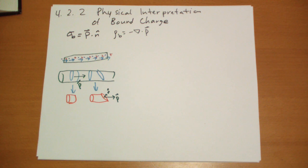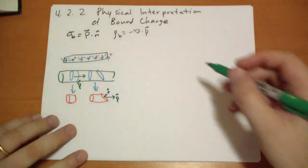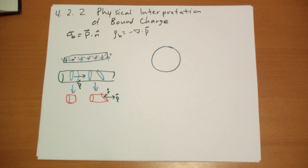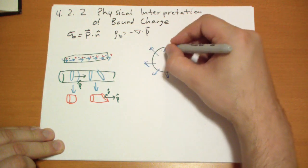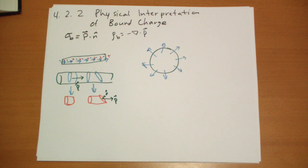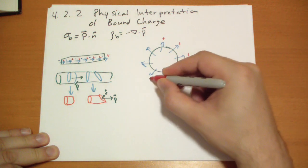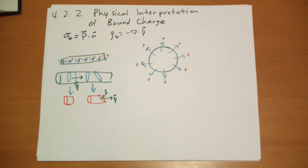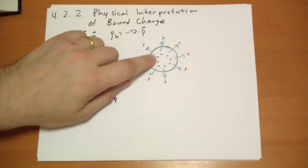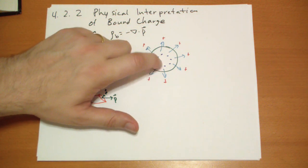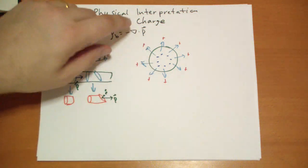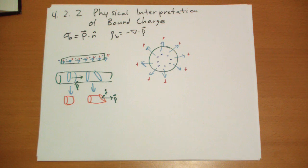What about the non-uniform polarization that gives you a bound volume charge? What does it look like when you have divergence? You take some volume and things are either going into or out of it. If the polarization is all pointing outward, you get a positive charge on the outside and negative charge accumulating on the inside — hence the bound volume charge is the negative of the divergence of the polarization.